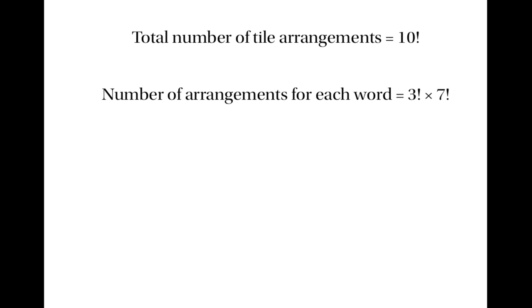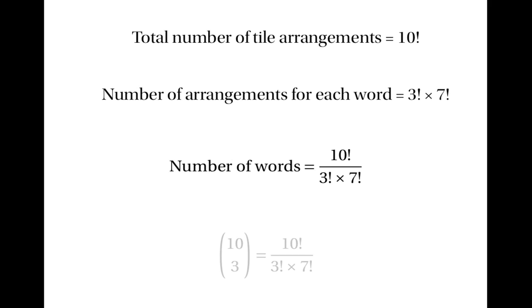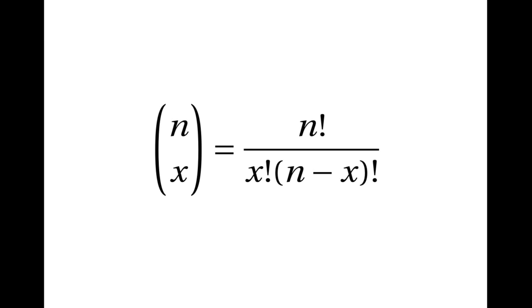We've now shown that the total number of ways of arranging the tiles is ten factorial, and the number of rearrangements for each word is three factorial times seven factorial. This means that the total number of words is ten factorial over three factorial times seven factorial. But remember that the number of words we can make is ten choose three, so we've shown that ten choose three equals ten factorial divided by three factorial times seven factorial. It's clear that we could go through this explanation using the letters n and x in place of ten and three, and so this proves that n choose x is equal to n factorial divided by x factorial times n minus x factorial.